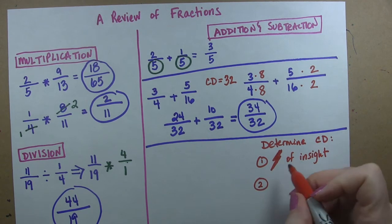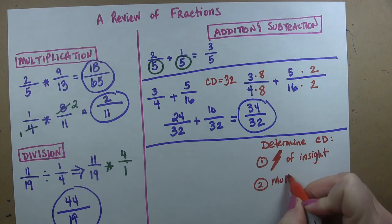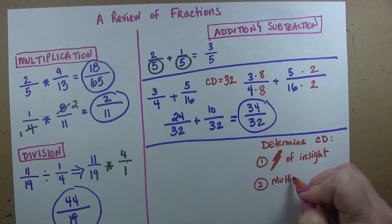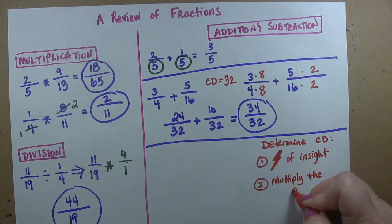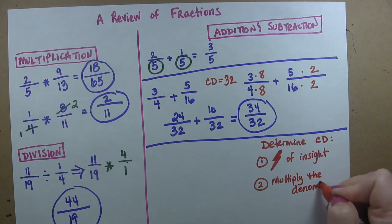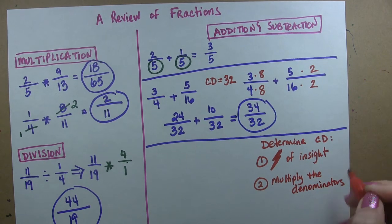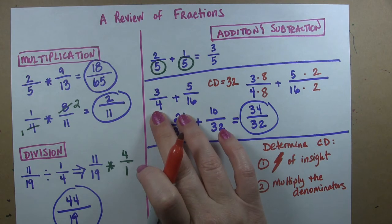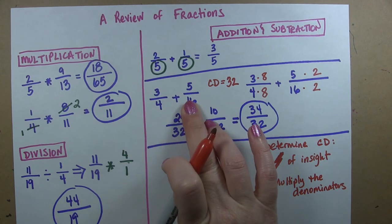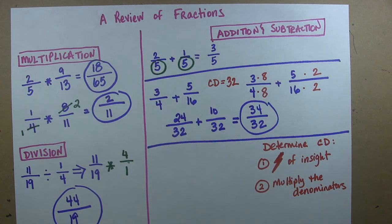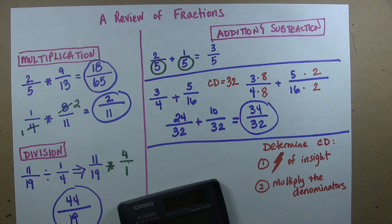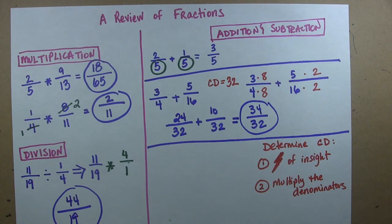If you get stuck, however, you can always multiply the denominators. So for this, you could have used 4 times 16, which I don't even know what that is. What is that? Let's see. 4 times 16 is 64. So I could have used 64 as my common denominator.